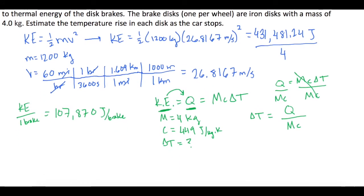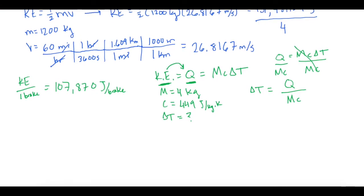So now the change in temperature for each brake is equal to the thermal energy divided by the mass times the specific heat. So let's get a little room. So the change in temperature is going to equal 107,870 joules for one brake divided by the mass of one brake, which is 4 kilograms, times the specific heat, which is 449 joules per kilogram Kelvin.